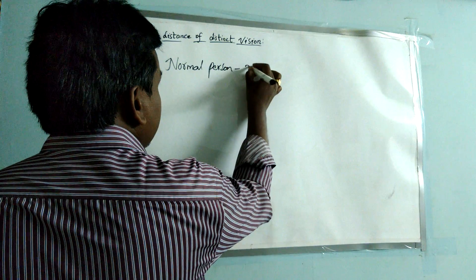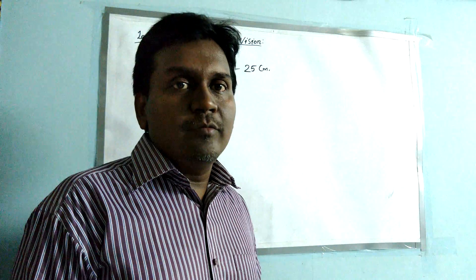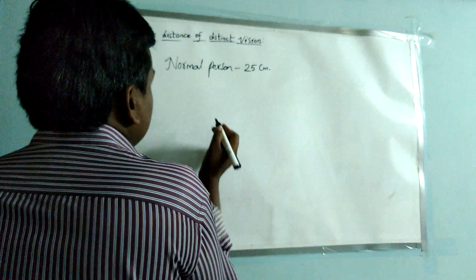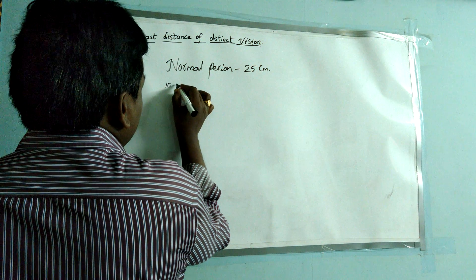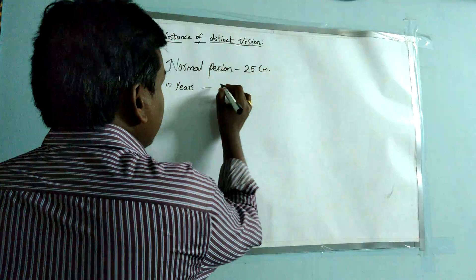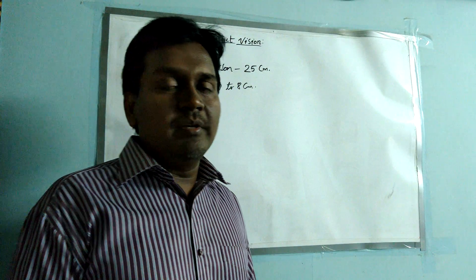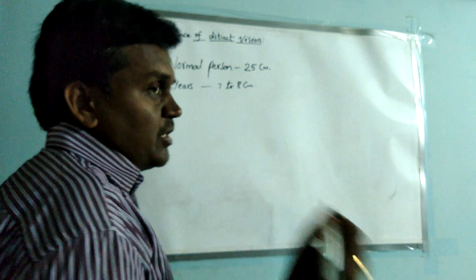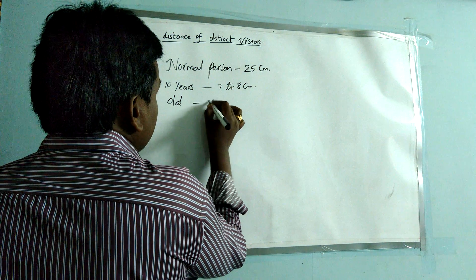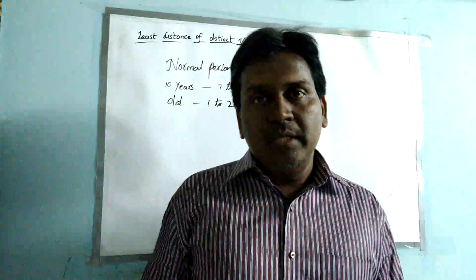For a normal person, the least distance of distinct vision is 25 centimeters. At 25 centimeters, the eye's focal length can focus very clearly on the object. For small children — those below 10 years — the least distance of distinct vision is around seven to eight centimeters. For older people, the least distance of distinct vision can be one to two meters or more, depending on the condition of the eye.